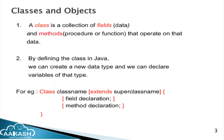What are classes and objects? A class is a collection of fields — that is data — and methods that operate on that data. A class contains the fields, that is the member variables and properties, which are the methods. By defining a class in Java we can create a new data type and declare variables of that data type.